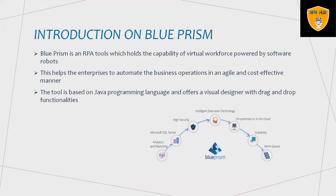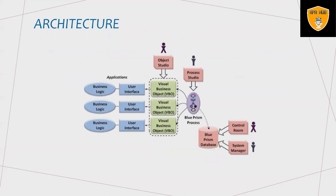Blue Prism uses a queue-centric approach for dynamically controlling the number of resources or robots operating against a given queue at any given time, allowing maximum flexibility in adjusting resources to work items based on business demands. Looking at how the architecture looks — Blue Prism has come up with tools having excellent automation features, and understanding its architecture is necessary to get the best out of it.